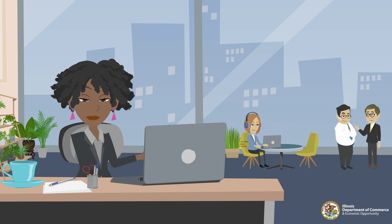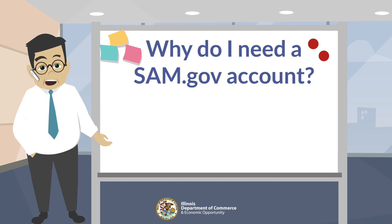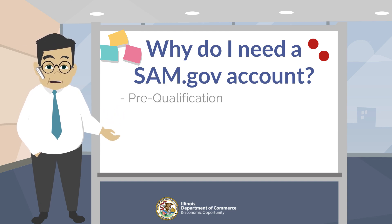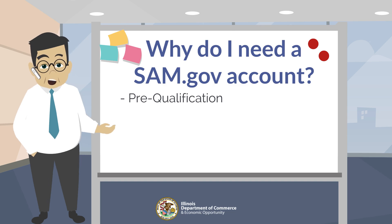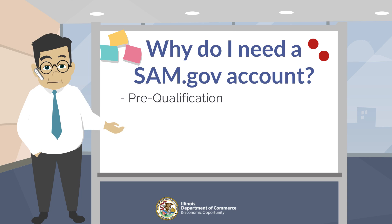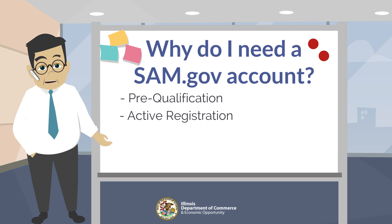Users can also search for publicly available award data. Illinois Administrative Code requires an entity be in pre-qualified status to be eligible to apply for and receive grants in the state of Illinois. A requirement of pre-qualification is to have an active public SAM.gov registration.